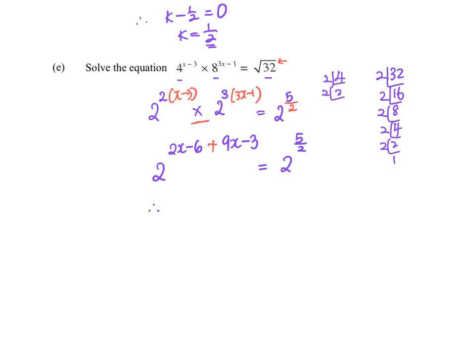Taking only the powers: 2x plus 9x gives 11x, minus 6 minus 3 is negative 9, equals 5 over 2. So 11x equals 5 over 2 plus 9, which is 11 and a half. Dividing by 11 gives x equals 23 over 22.